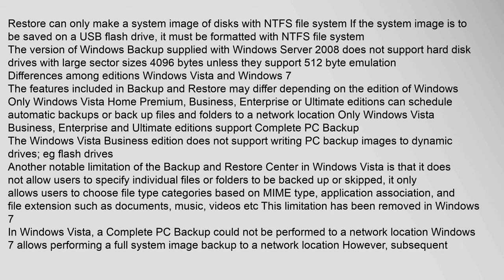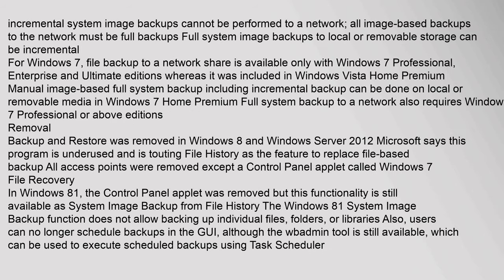This limitation has been removed in Windows 7. In Windows Vista, a Complete PC Backup could not be performed to a network location. Windows 7 allows performing a full system image backup to a network location; however, subsequent incremental system image backups cannot be performed to a network — all image-based backups to the network must be full backups. Full system image backups to local or removable storage can be incremental. For Windows 7, file backup to a network share is available only with Windows 7 Professional, Enterprise, and Ultimate editions, whereas it was included in Windows Vista Home Premium. Full system backup to a network also requires Windows 7 Professional or above editions.